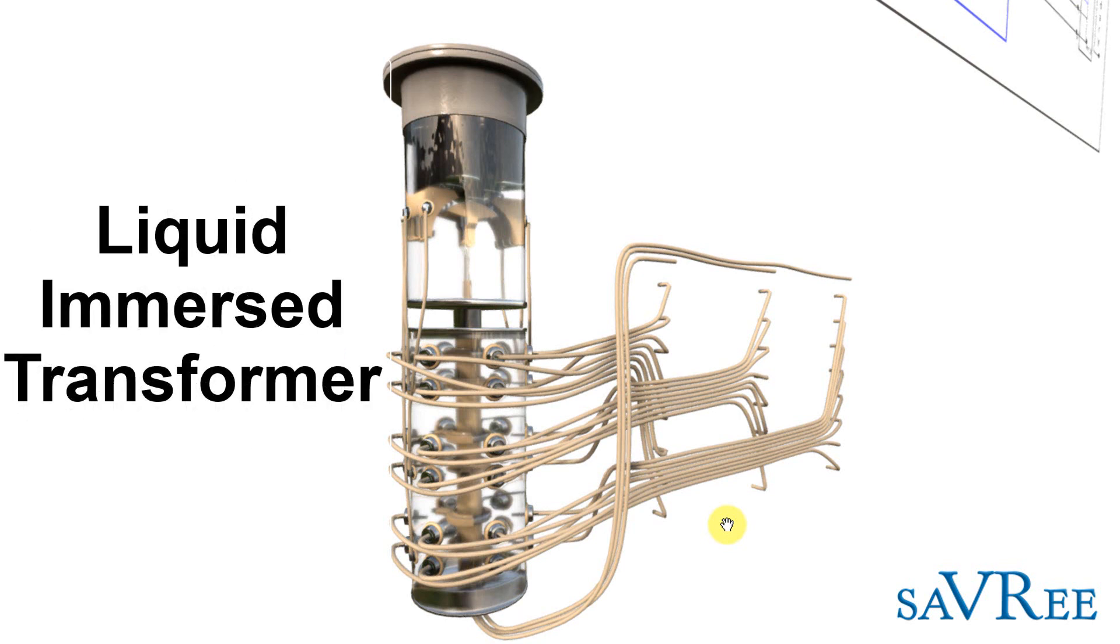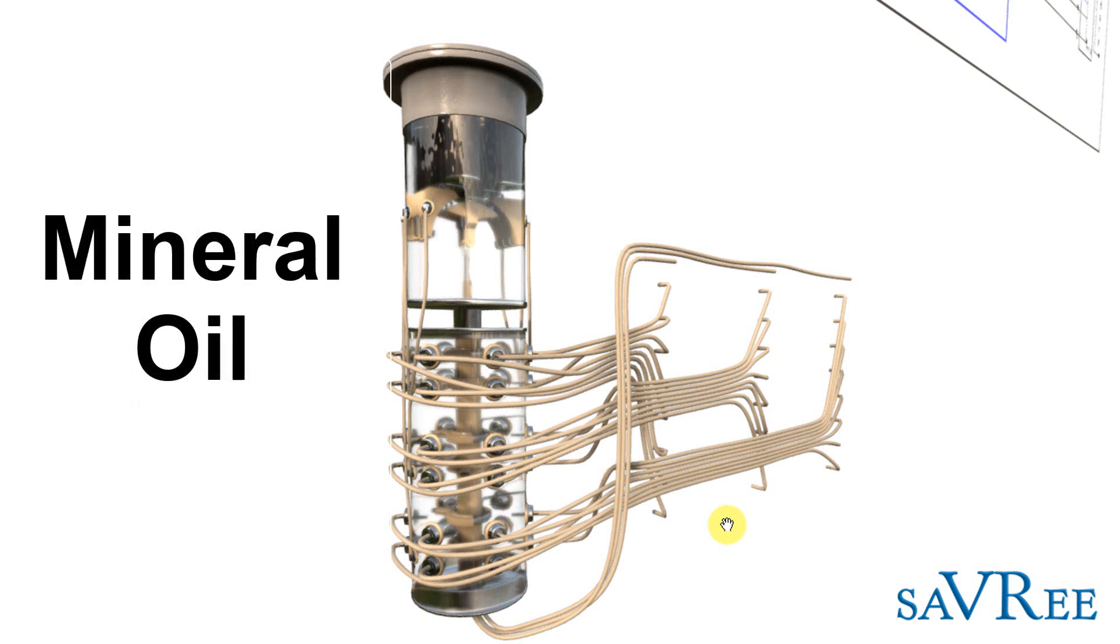Typically, the insulating liquid is mineral oil and it will have either its own compartment in which it will sit within mineral oil, or it will sit in the main tank of the transformer with the transformer core and windings.